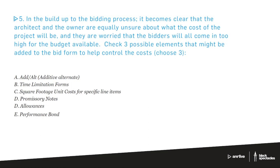This one might have a little controversy to it. So we'll see how we go. In the buildup to the bidding process, it becomes clear that the architect and the owner are equally unsure about the cost of the project, what the cost of the project will be. So like, if you imagine, maybe it's an adaptive reuse, something like that, where there's quite a lot of, you're unsure about what's inside, once you start opening walls up, things like that. So there's going to be costs, but you're just not 100% sure about what's going on. And they are worried that the bidders will all come in too high for the budget availability.